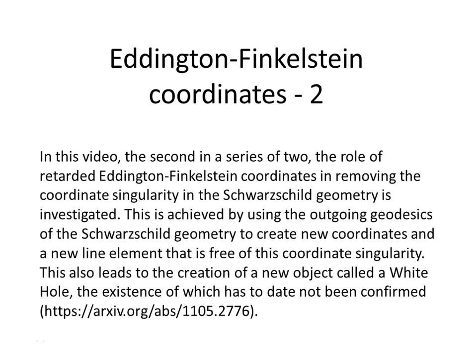In this video, the second in a series of two, the role of retarded Eddington-Finkelstein coordinates in removing the coordinate singularity in the Schwarzschild geometry is investigated. This is achieved by using the outgoing geodesics of the Schwarzschild geometry to create new coordinates and a new line element that is free of this coordinate singularity. This also leads to the creation of a new object called a white hole, the existence of which has to date not been confirmed.